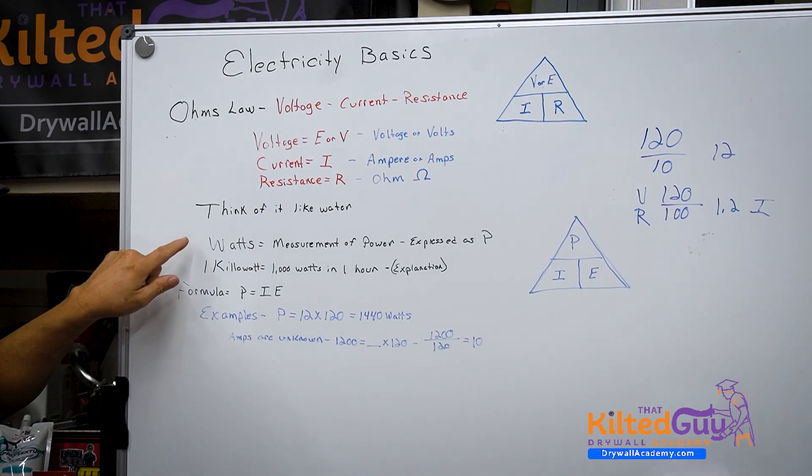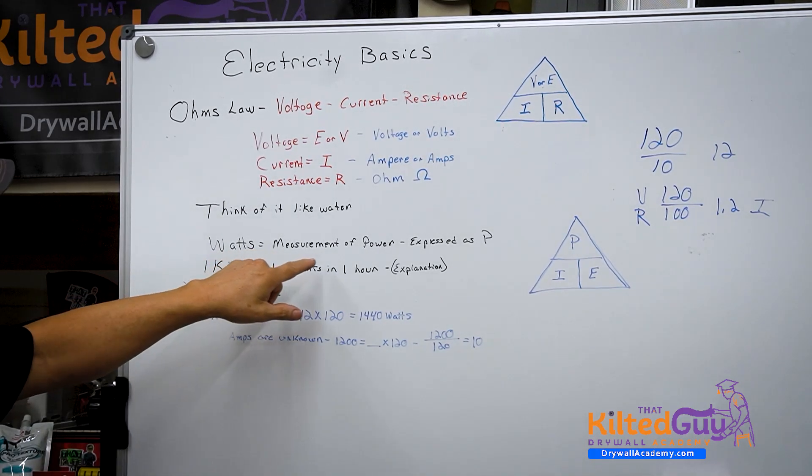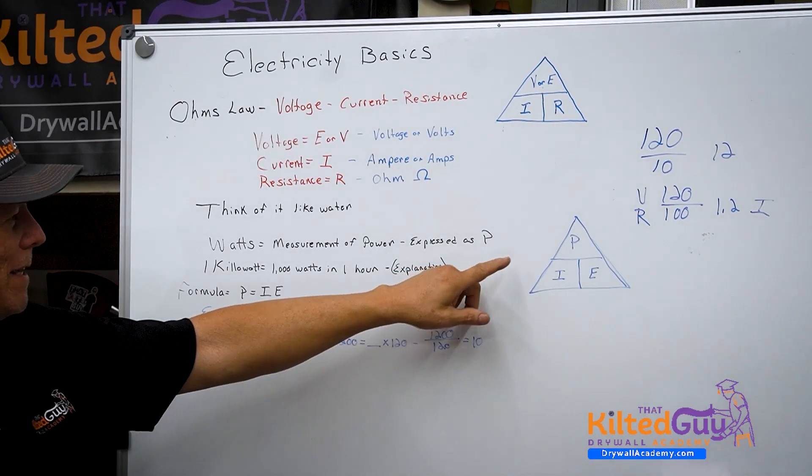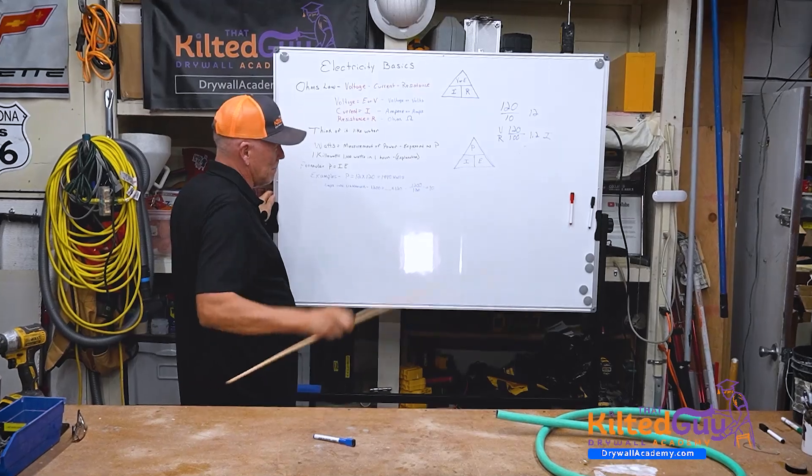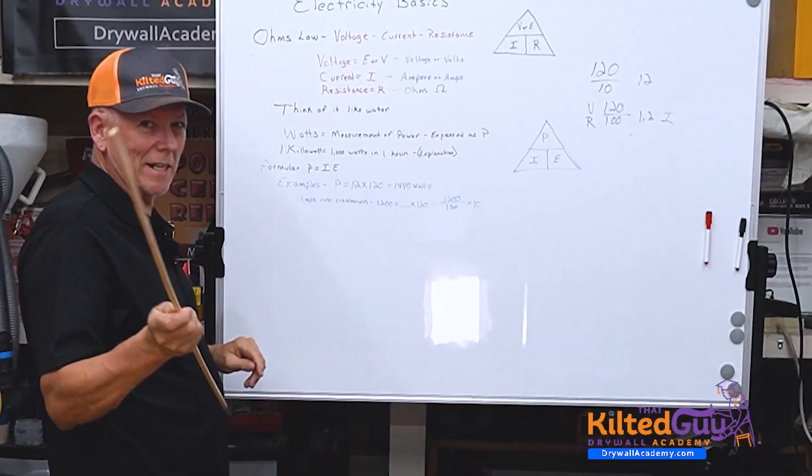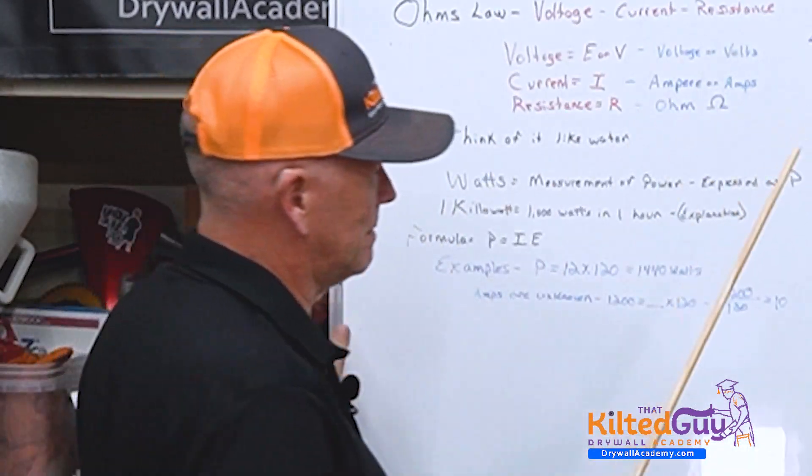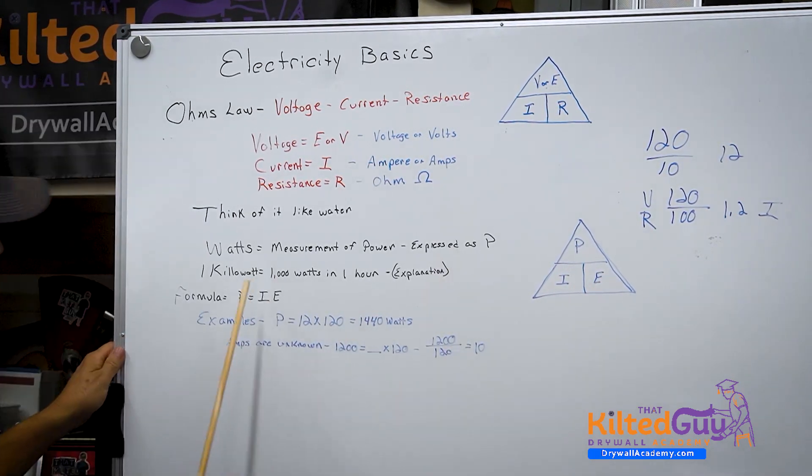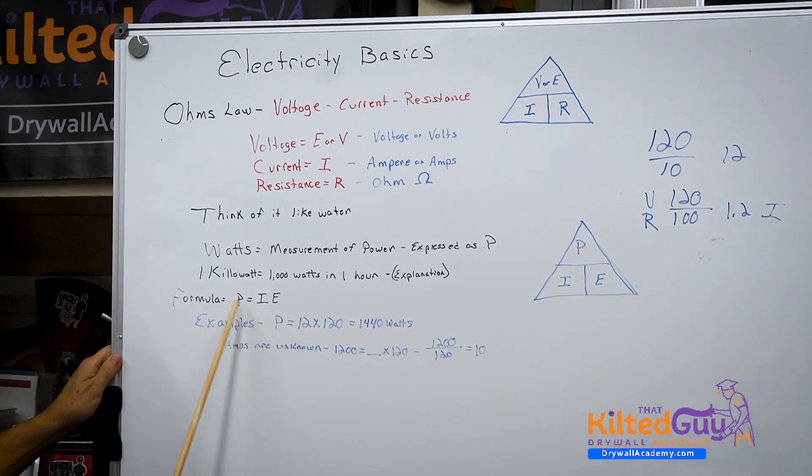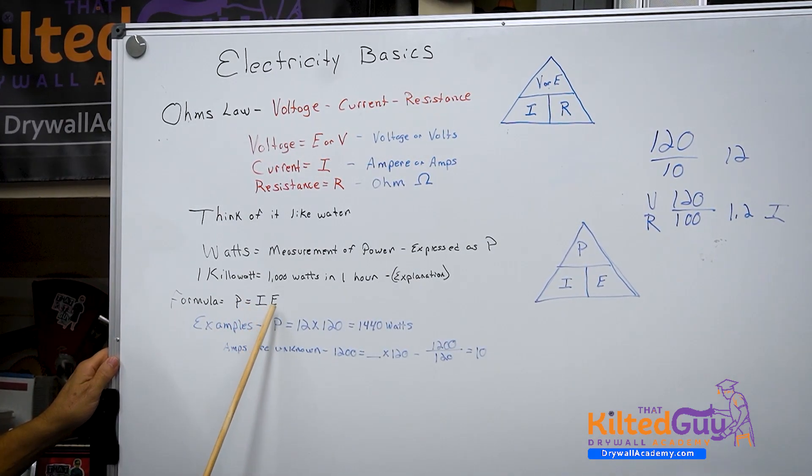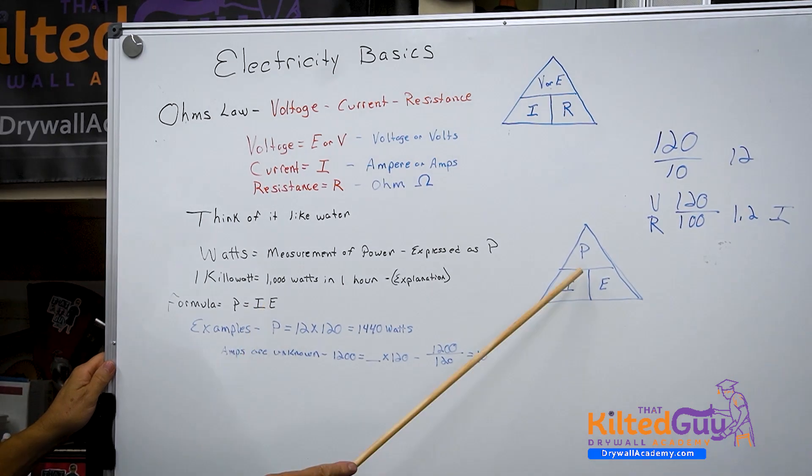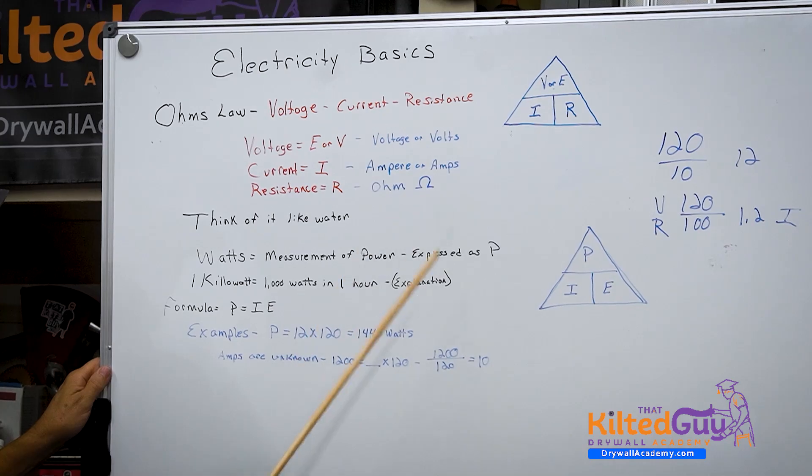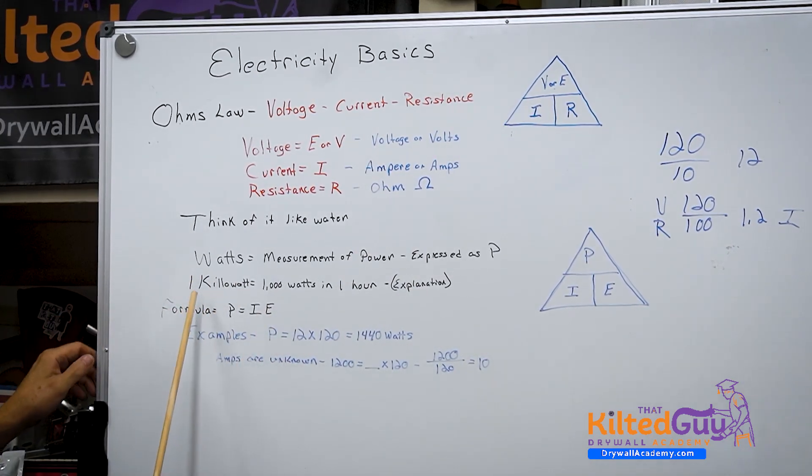Let's go back to this. One of the most common things we use is watts. Watts is the measurement of power, usually that you're using. It's expressed as the letter P. So there's a formula here too. Get my pointer out, kids pay attention, take notes in your little iPads. P, power, is equal to I, amperage, times voltage. We just learned it as P equals I times E. That's the most common one you need to know.